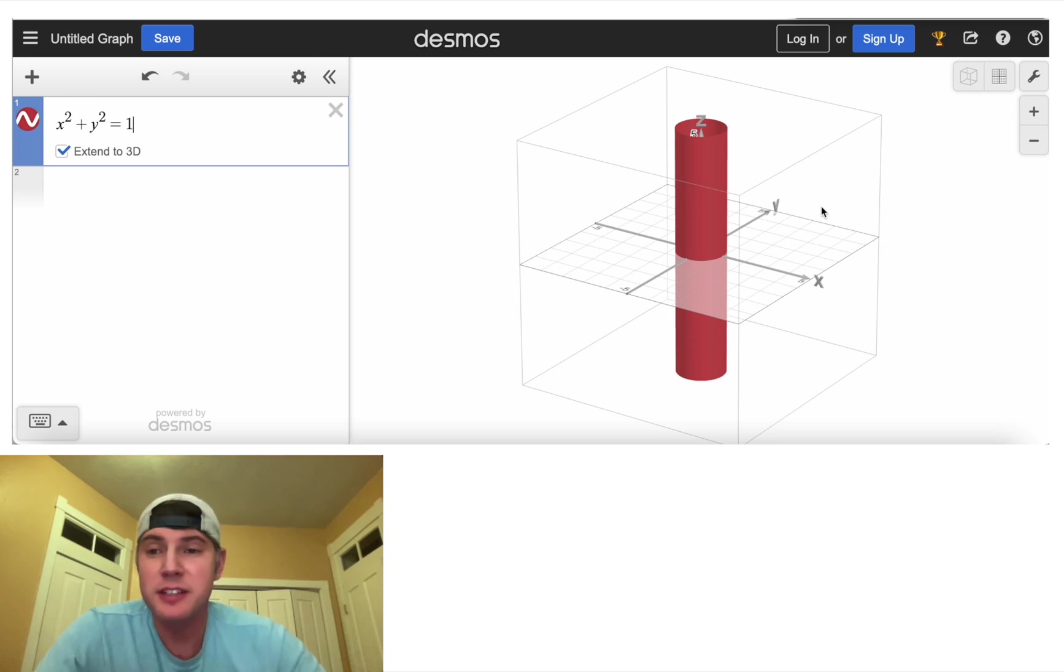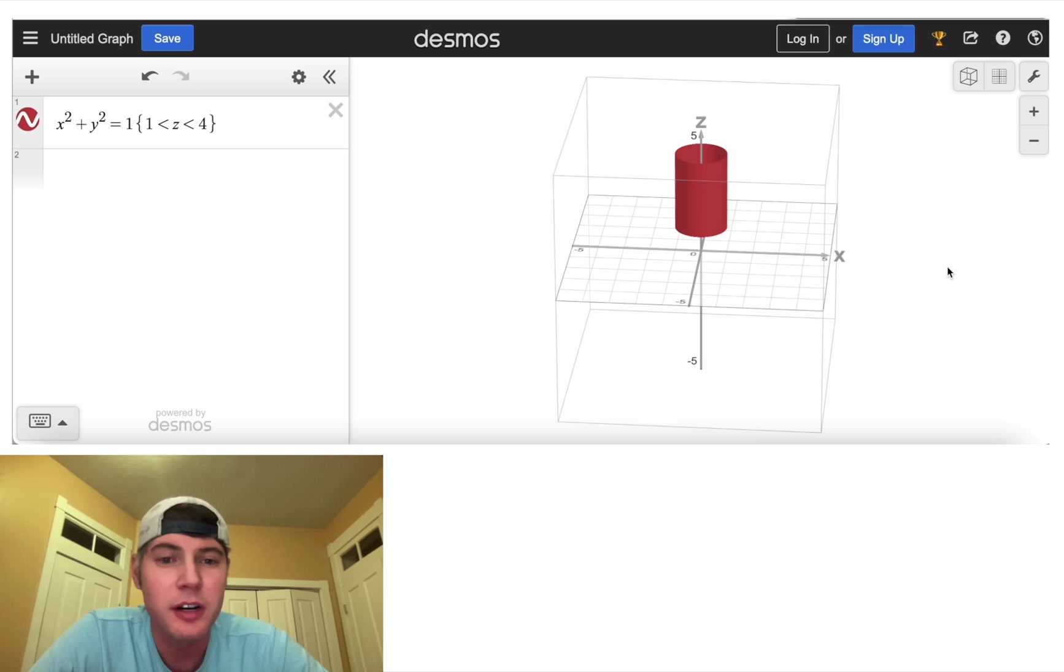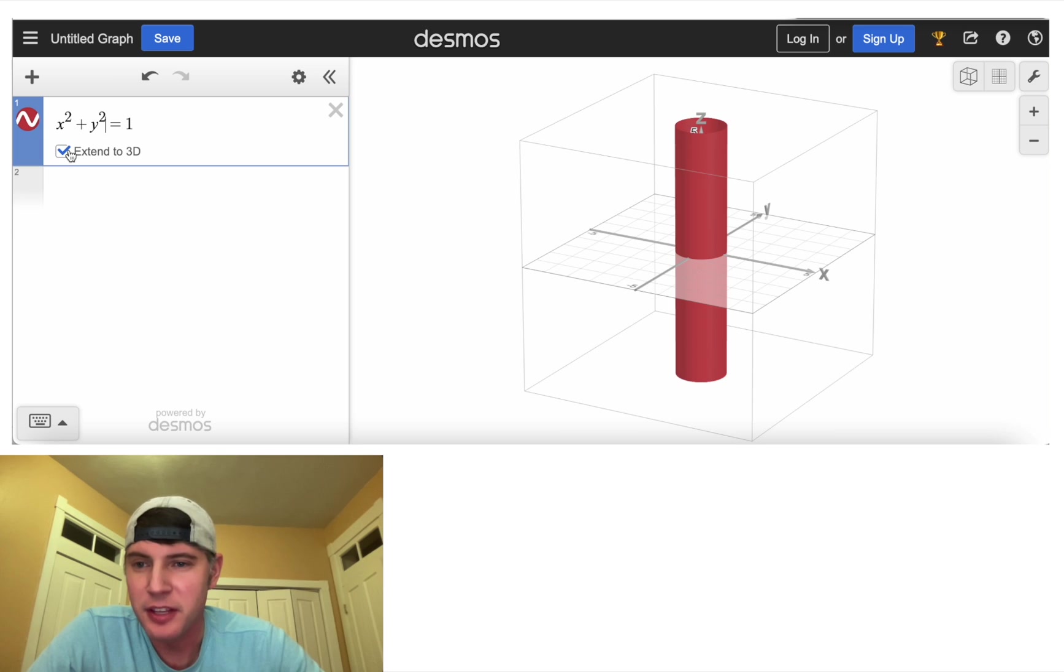And if we want to shorten that cylinder, we can restrict the Z. We can say something like 1 < Z < 4. And now we have that cylinder is just from one to four. But I want to make a sphere. So let's get rid of this.